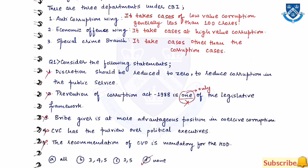There are three departments under CBI: the Anti-Corruption Wing, the Economic Offenses Wing, and the Special Crime Branch. The Anti-Corruption Wing handles cases of low-value corruption, generally less than 100 crores. The Economic Offenses Wing handles high-value corruption cases. The Special Crime Branch handles cases other than corruption cases.